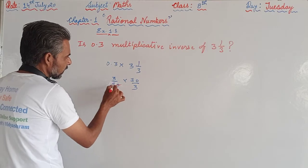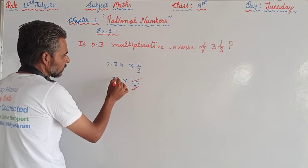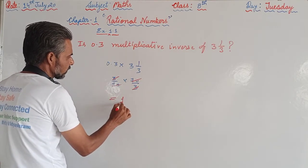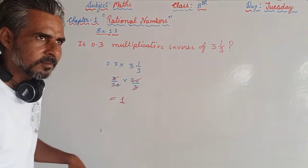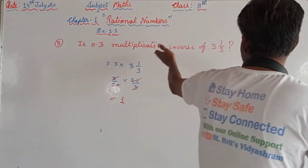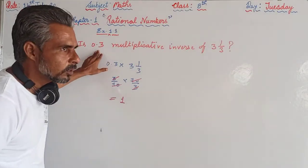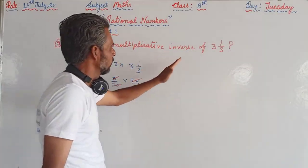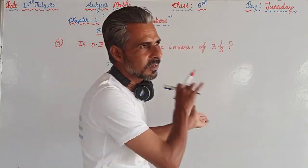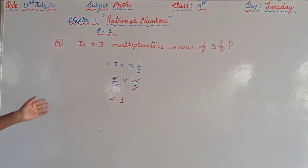So here we can say that 10 cancel out 10, 3 cancel out 3, and this is 1. If we get 1, then we can say that this is the multiplicative inverse of 0.3, or 0.3 is the multiplicative inverse of 3 and 1 by 3, or vice versa. So this is the method. This is how we can show that the given numbers are reciprocal of each other.